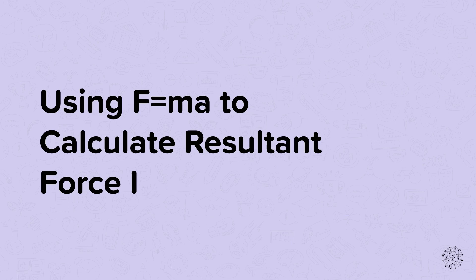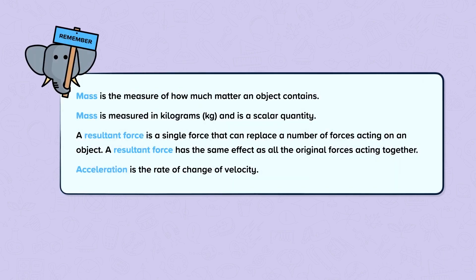Using F equals MA to calculate resultant force. Mass is the measure of how much matter an object contains. Mass is measured in kilograms and is a scalar quantity. Resultant force is a single force that can replace a number of forces acting on an object, having the same effect as all the original forces acting together. Acceleration is the rate of change of velocity.